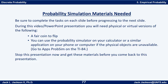Now we're going to do a simulation. Be sure to complete the task on each slide before progressing to the next. During this presentation you will need a fair coin to flip. If you're doing this many times, you can use a probability simulator on your calculator — for example, on a TI-84 you can use the app 'Prob Sim' — or a similar application on your phone or computer if physical objects are unavailable. Stop and get these materials before continuing.